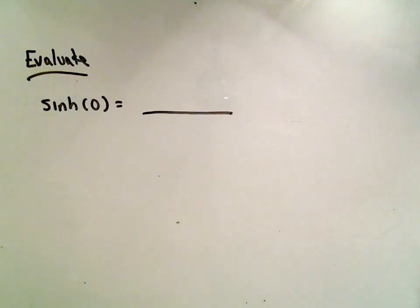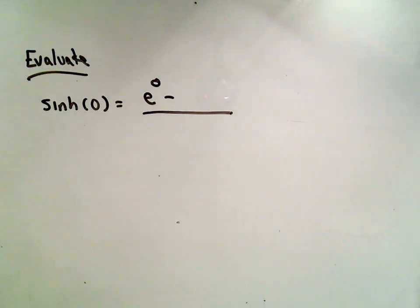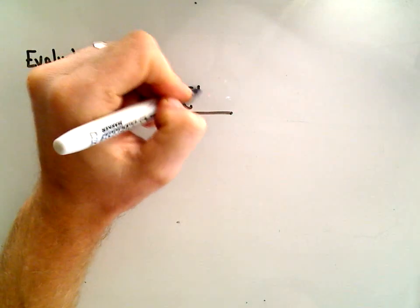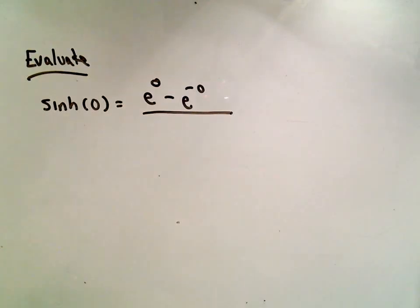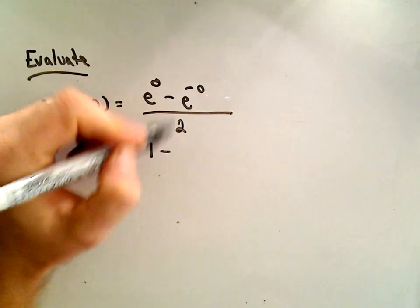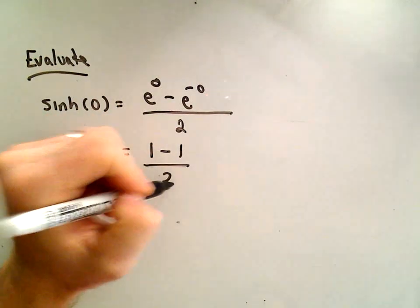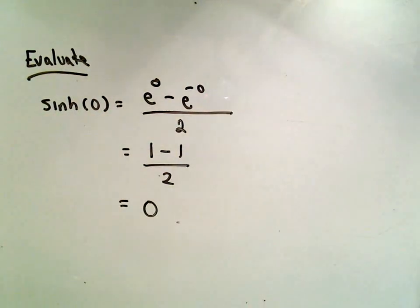Well, again, we have our definition. Hyperbolic sine is e to the x, so in this case x is 0, minus, for the hyperbolic sine, e to the negative 0, and we divide that by 2. Well, on top we'll get e to the 0, which is 1. Again, e to the 0, which is another 1 over 2.